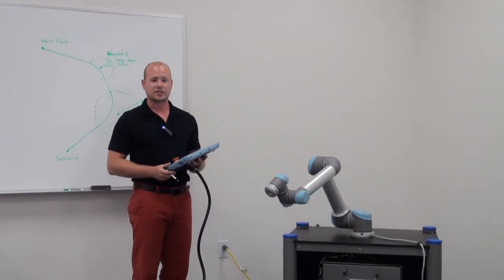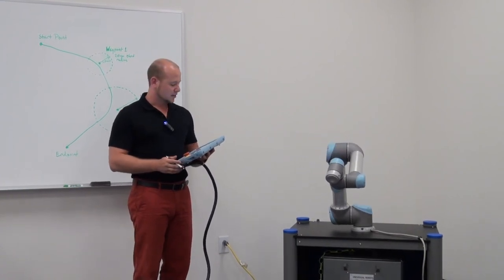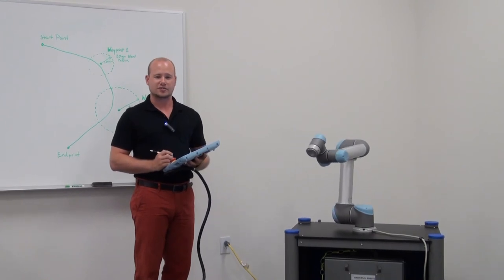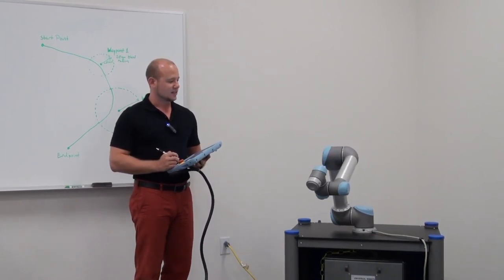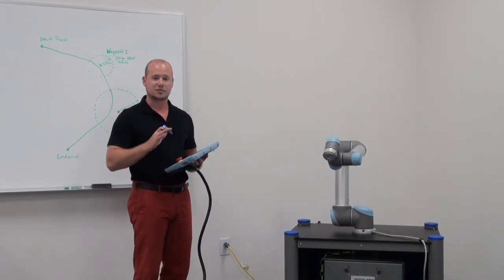And it's up to the user to define or determine what kind of curve radius that they would like. And the good thing about move P is that around these curves, the robot will maintain a constant velocity. And that's needed for applications like gluing, dispensing, and tracing around an object.